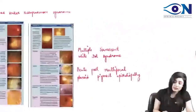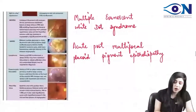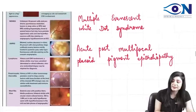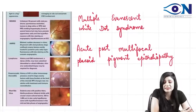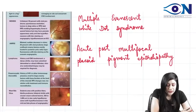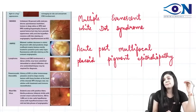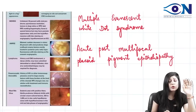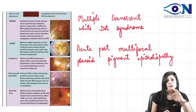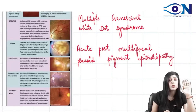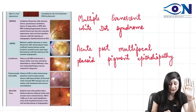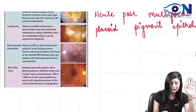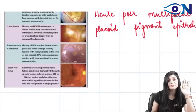Other names include MEWDS — multiple evanescent white dot syndrome — and APMPPE, which stands for acute posterior multifocal placoid pigment epitheliopathy. Even if you don't know the full forms, that's fine. We also have lymphomas, pneumocystis choroiditis, and West Nile fever.